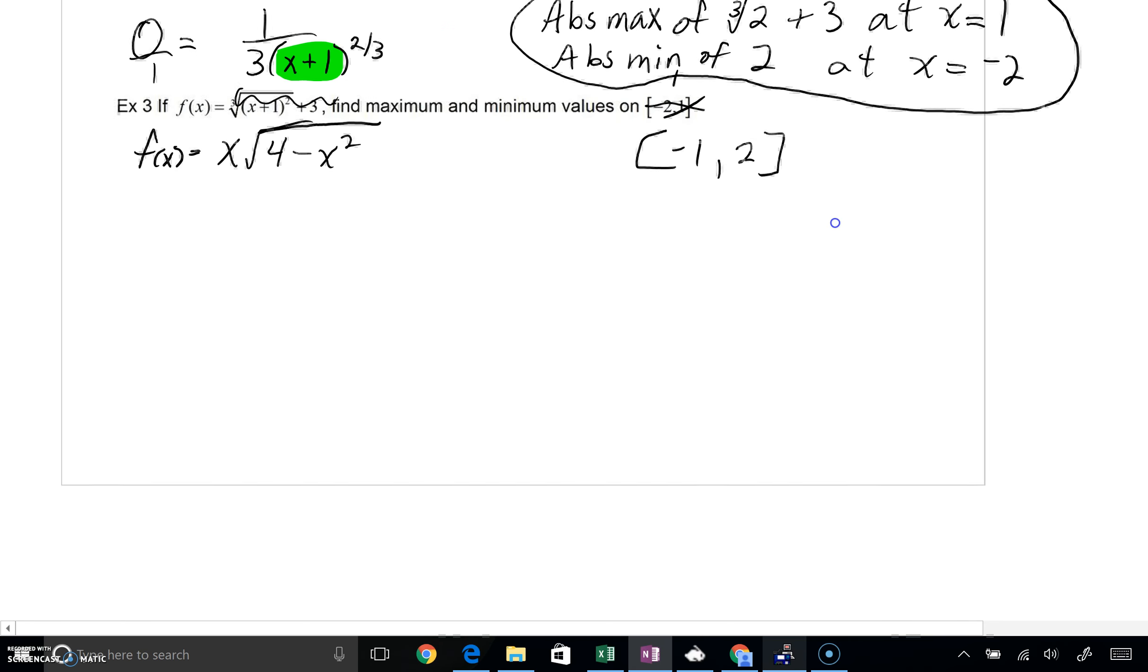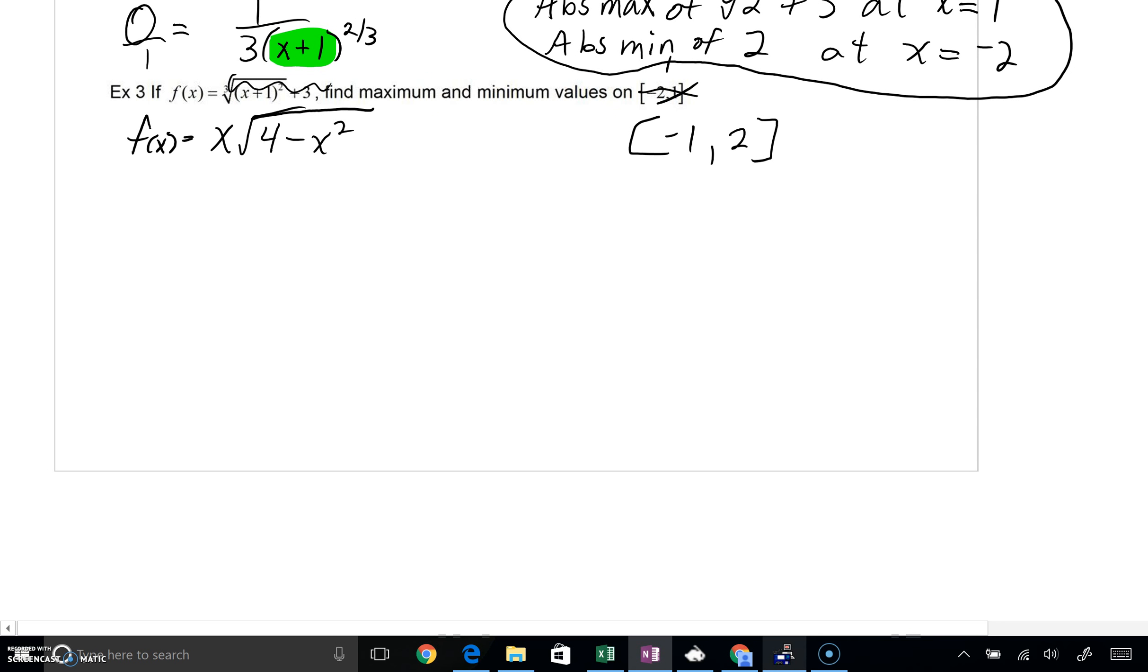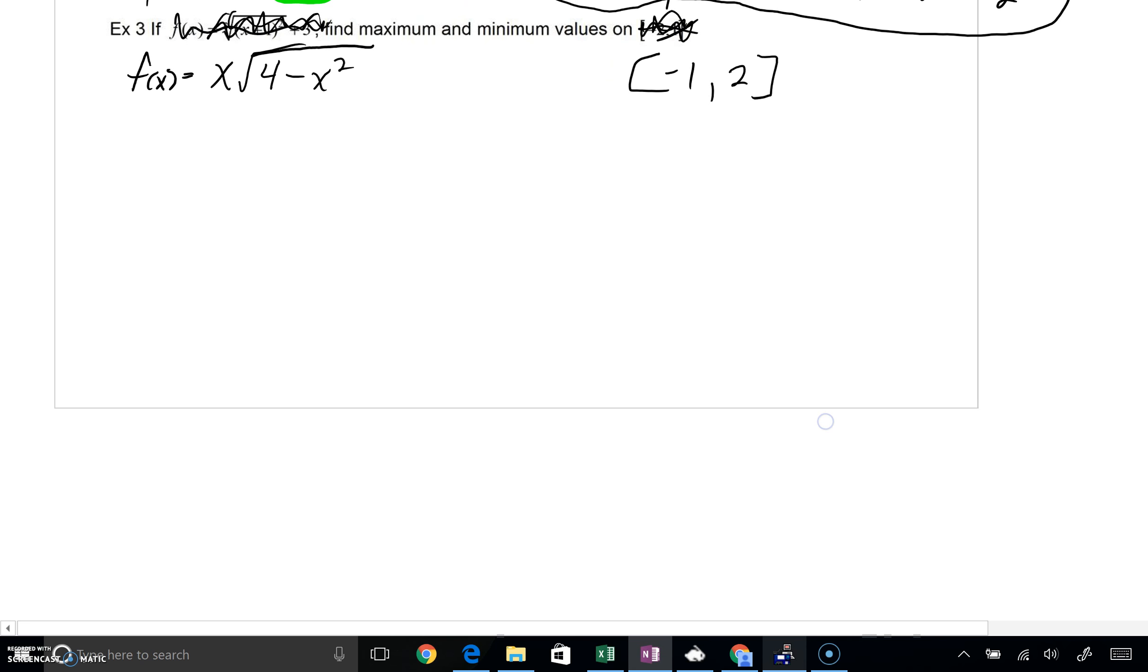For example 3, our last one, I did want to change the problem. So please change your notes to be f of x equals x times the square root of 4 minus x squared. We're also going to change our interval. We're going to go from negative 1 to 2. And, you know, at this point, it might very well seem like this is exactly the same basic type of problem. However, there is something to be very careful about.